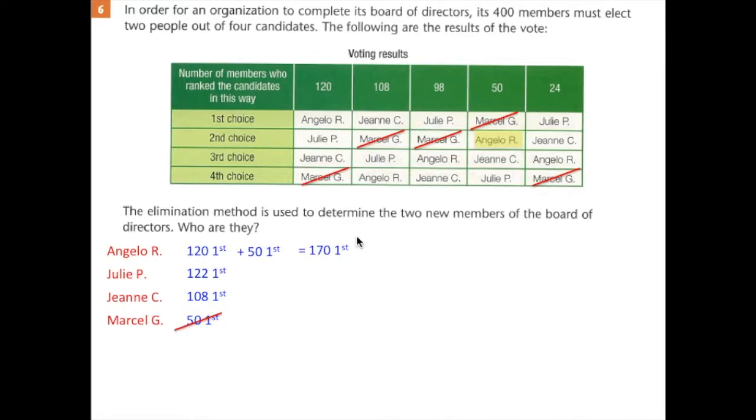Which two people are we going to pick? Well, we're going to pick Angelo. And then who has the next most first choices is Julie. So Angelo and Julie. First place is Angelo. In second place is Julie. So the two new members are Angelo and Julie.